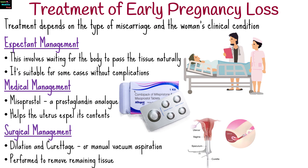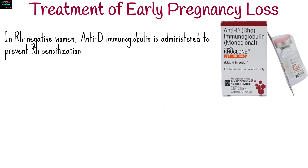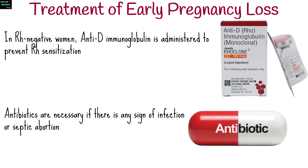Procedures like dilation and curettage or manual vacuum aspiration are performed to remove remaining tissue, especially in cases of excessive bleeding or infection. In RH-negative women, anti-D immunoglobulin is administered to prevent RH sensitization. Antibiotics are necessary if there is any sign of infection or septic abortion.